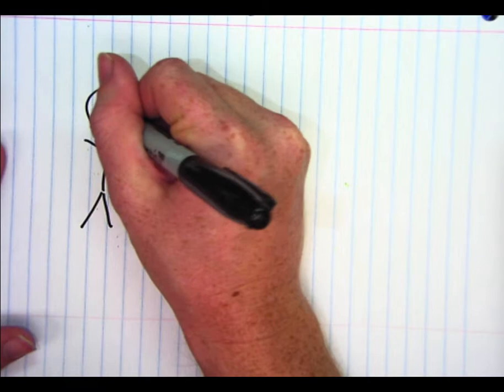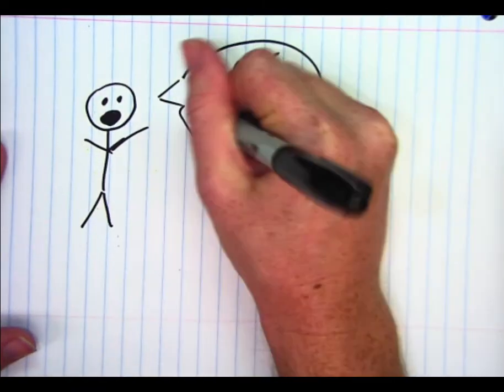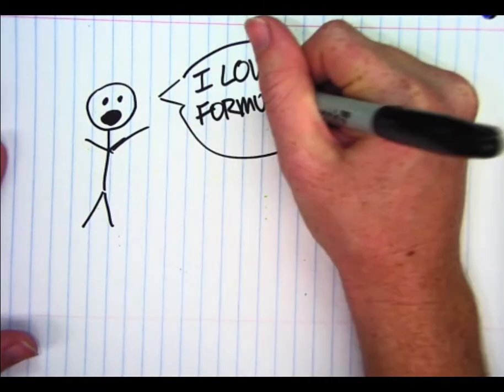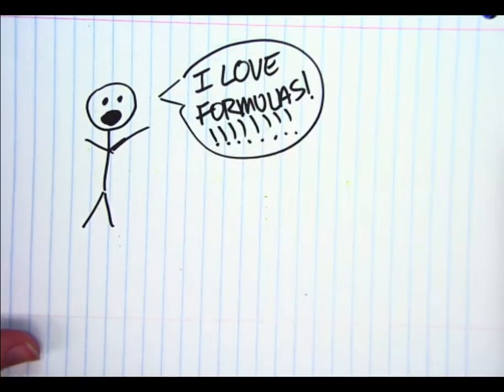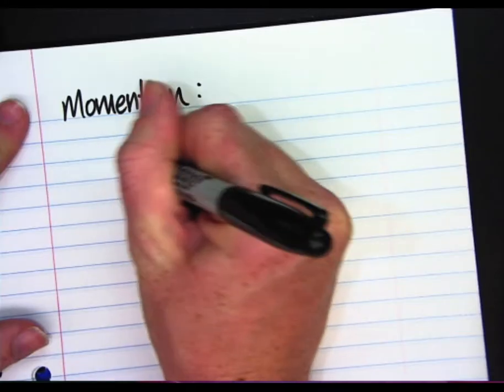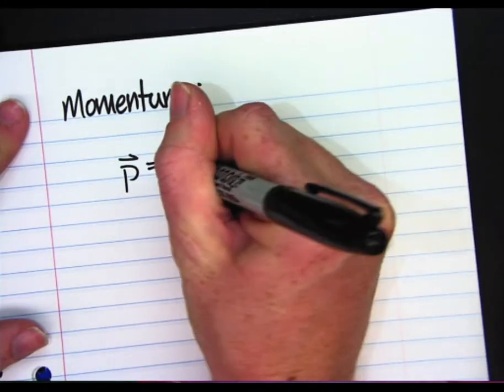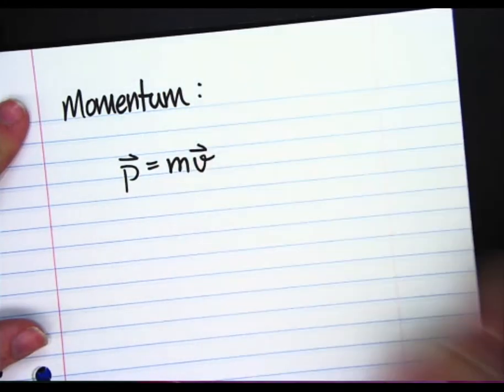Let's go ahead and define our terms quickly using formulas, because formulas are fantastic in physics. So we're going to define momentum: p equals m times v.